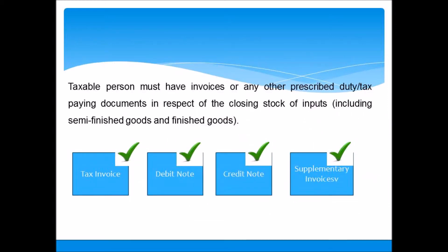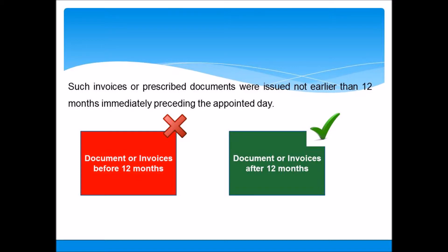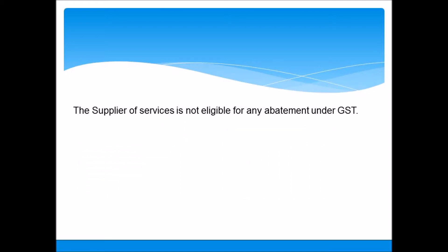The taxable person must have invoices or any other prescribed duty or tax paying documents in respect of the closing stock of inputs, including semi-finished goods and finished goods. Such invoices or prescribed documents must have been issued not earlier than 12 months immediately preceding the appointed day. Additionally, the supplier of services is not eligible for any abatement under GST.